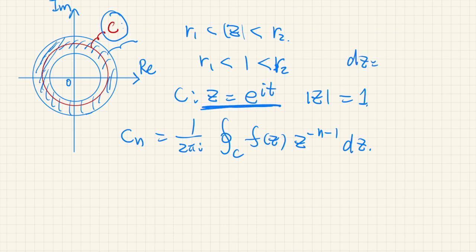So dz is equal to i e to the power of it dt, and t runs from 0 to 2 pi. So this is equal to integral from 0 to 2 pi, f of e to the power of it.